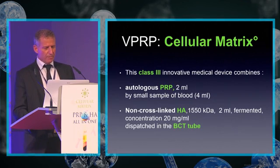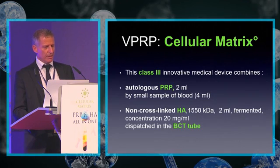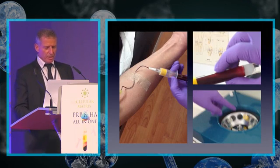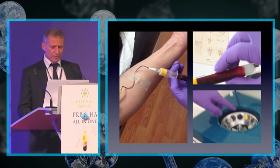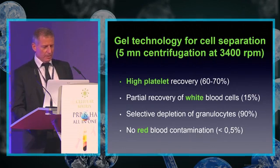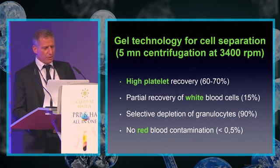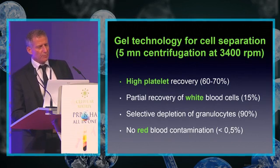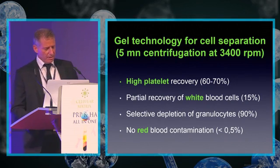The HA component is 2 mL, fermented, at a concentration of 20 mg/mL, dispensed in the BCT tube. The first step is blood sampling and centrifugation. Cellular Matrice uses gel technology for cell separation: 5 minutes centrifugation at 3,400 RPM.